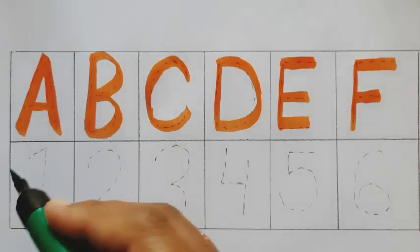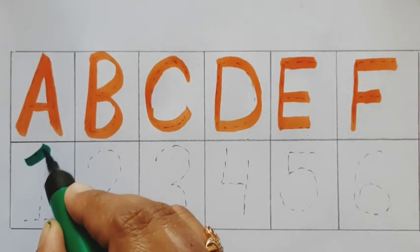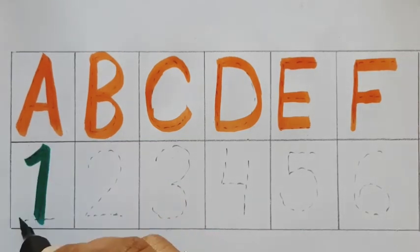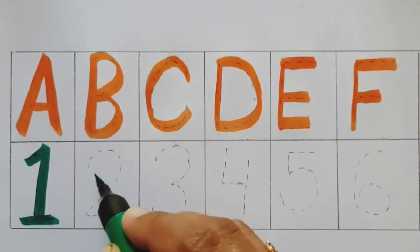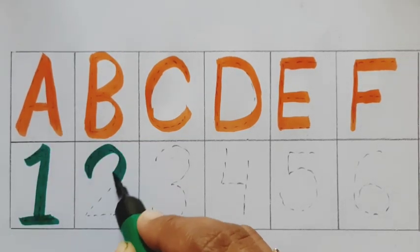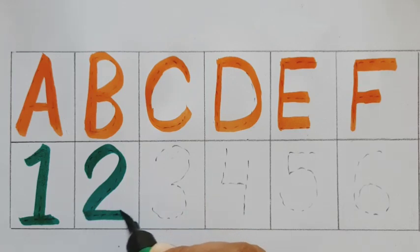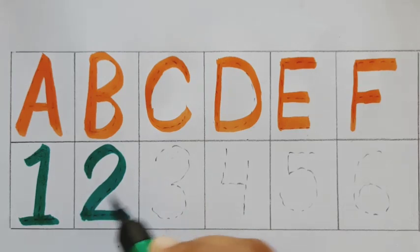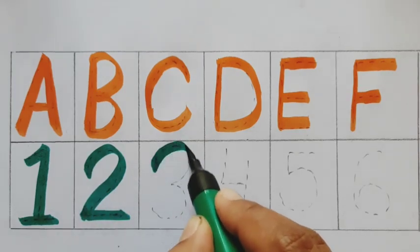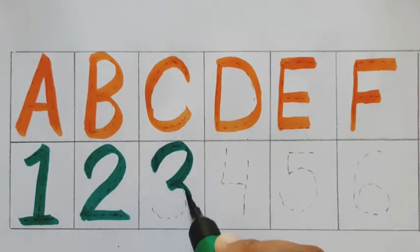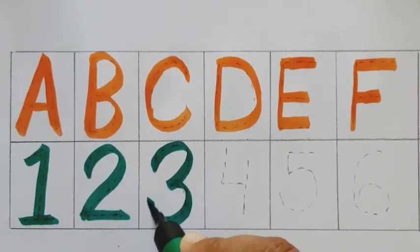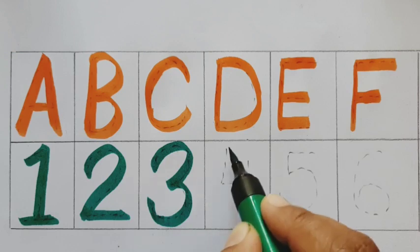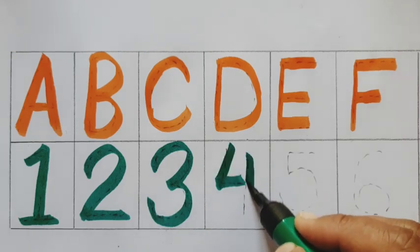Green color. Number one, one. Green color. Number two, two. Green color. Number three, three.